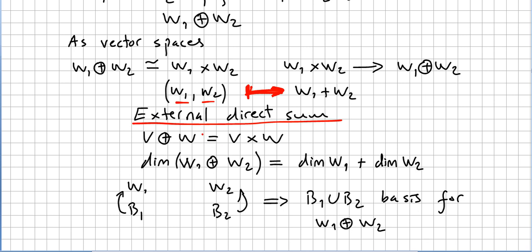There is also this concept of external direct sum. We have the space V times W, and the dimension of W_1 ⊕ W_2 equals the dimension of W_1 plus the dimension of W_2.